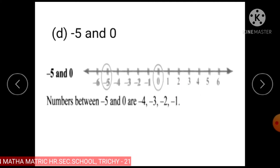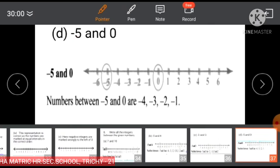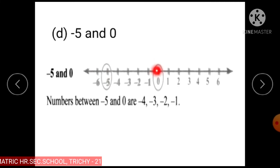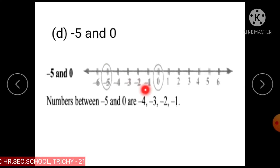Subdivision D: Find the numbers between minus 5 and 0. The numbers between minus 5 and 0 are minus 4, minus 3, minus 2, and minus 1.